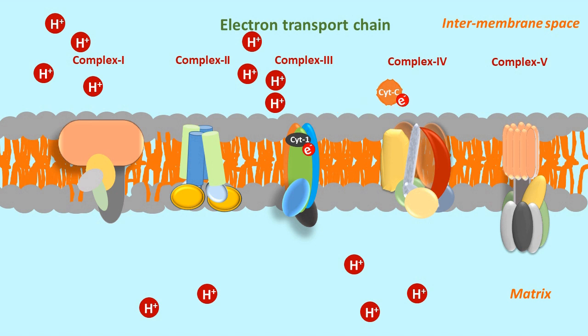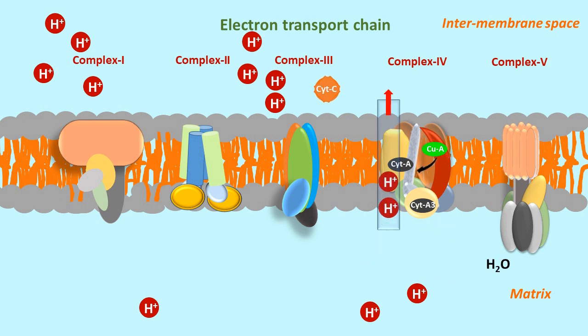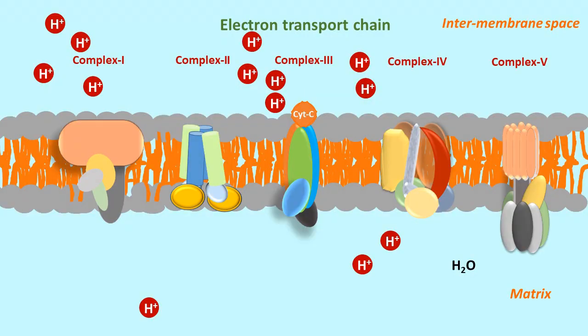Now, two electrons of iron sulfur cluster are first given to copper A complex, then to other cytochromes and cytochrome A, and finally accepted by oxygen and protons which yield a water molecule. In this last phase, another two protons are sent across inner mitochondrial membrane towards periplasm. This completes the journey of NADH electrons.